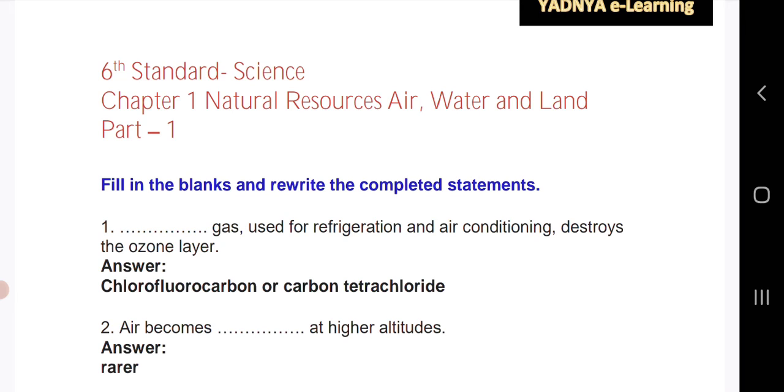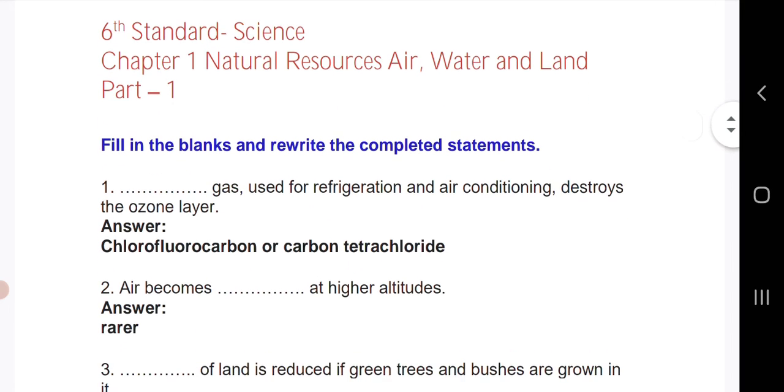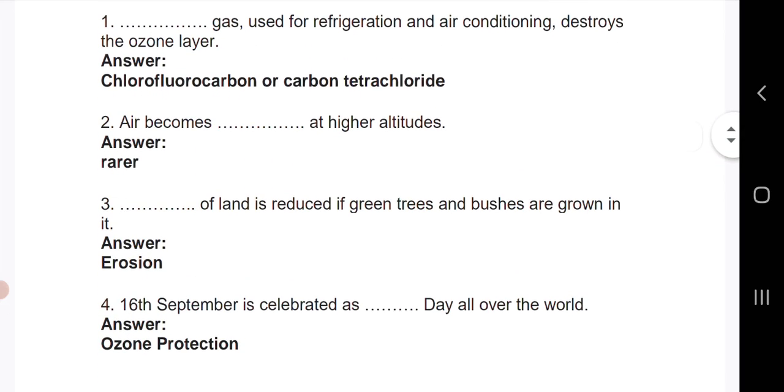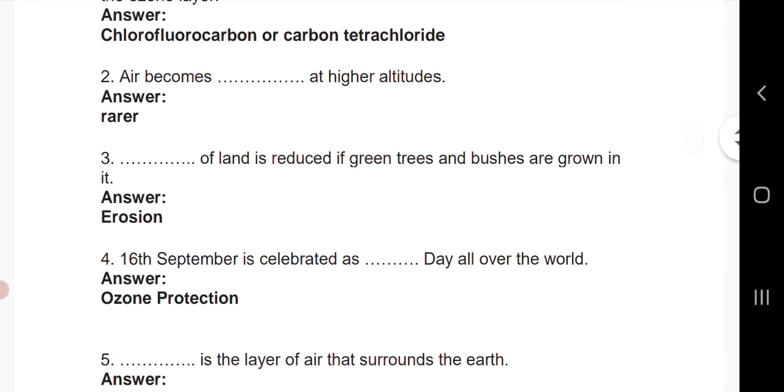First question: gas used for refrigeration and air conditioning destroys the ozone layer. Answer: chlorofluorocarbon or carbon tetrachloride. Second question: air becomes dash at higher altitude. Answer: air becomes rare at higher altitude.